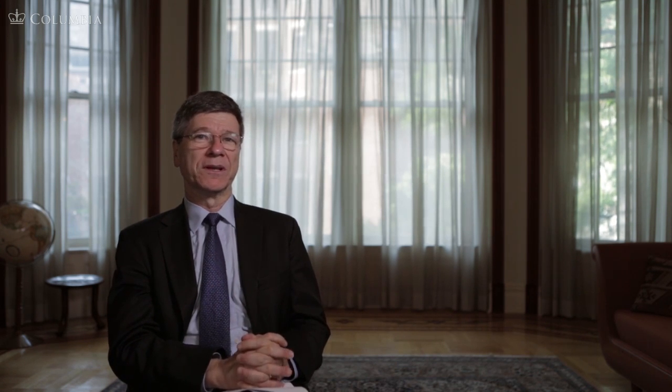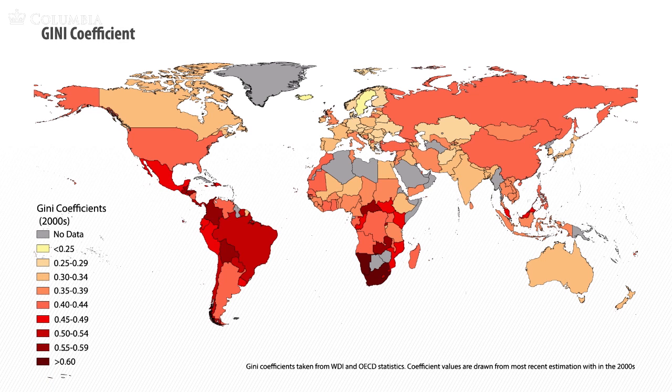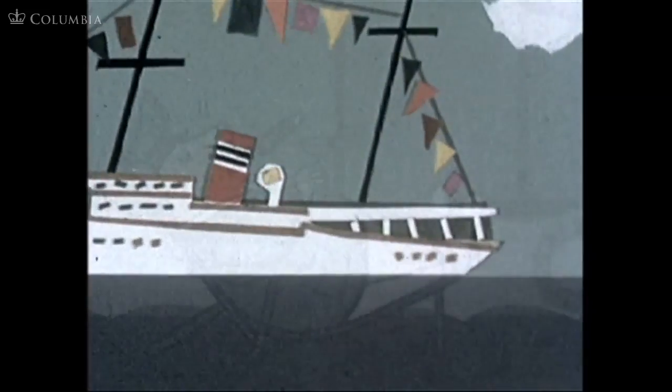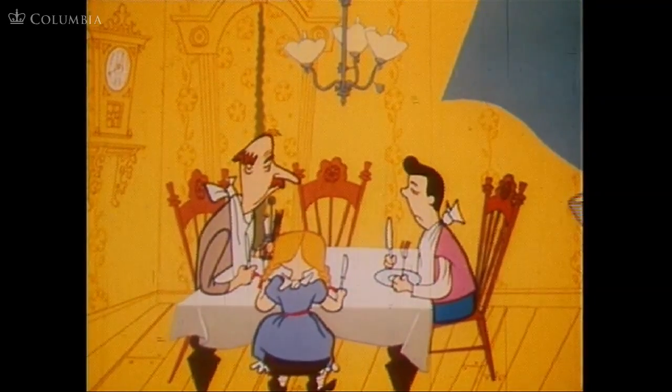Another measure that is quite useful, a little bit fancier, is a measure called the Gini coefficient. It's a measure that varies between zero and one. Zero meaning complete equality — everybody has the same income. And one is exactly the case of one person in the country having everything — the king, the potentate. He owns everything and everybody else is completely impoverished, they have nothing. That would be a Gini coefficient of one.